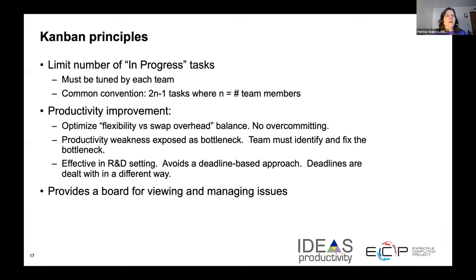There are basic principles you should follow for Kanban. An important principle is to limit the number of tasks currently being worked on — this limits the cost of context switching for team members. Each team needs to determine the number of tasks that can be active; a good rule is two times the number of team members minus one. Kanban is good at exposing bottlenecks. If a column like 'waiting for review' is full, you can easily see the bottleneck and work on fixing the processes that affect it. Kanban avoids a deadline approach more common in Scrum and is a nice way to manage tasks, view progress, and improve productivity.